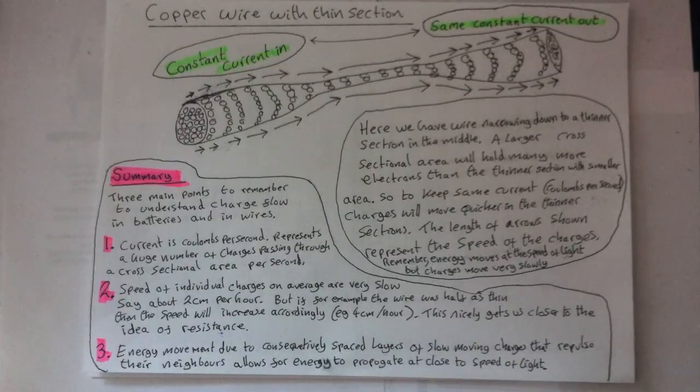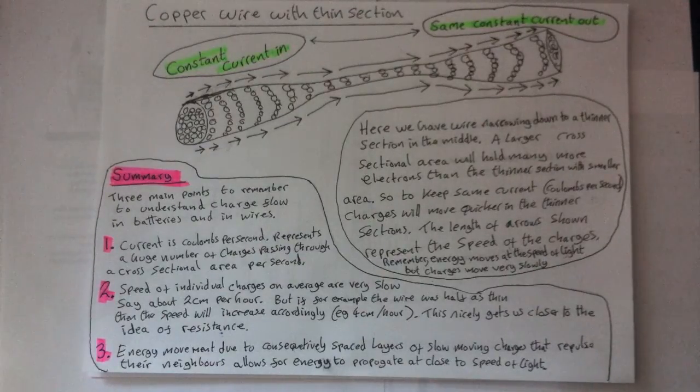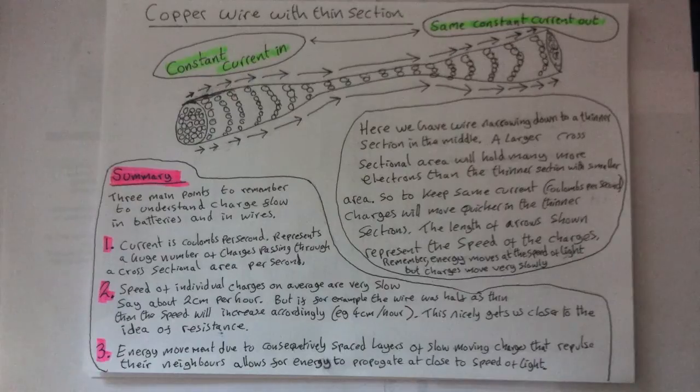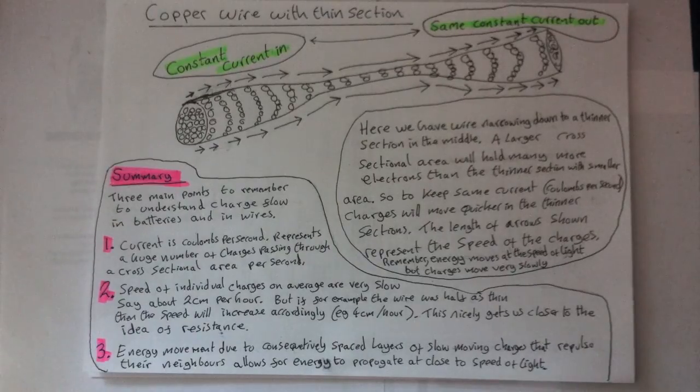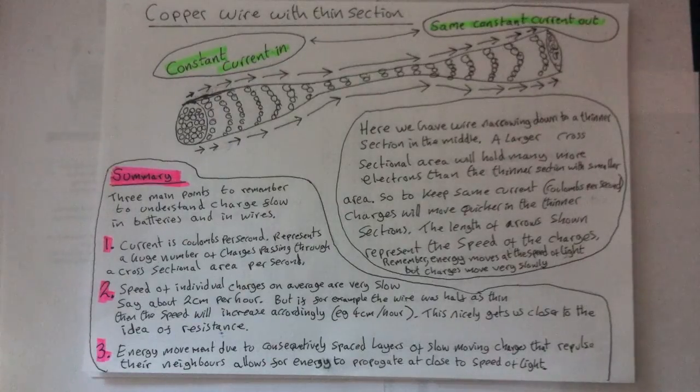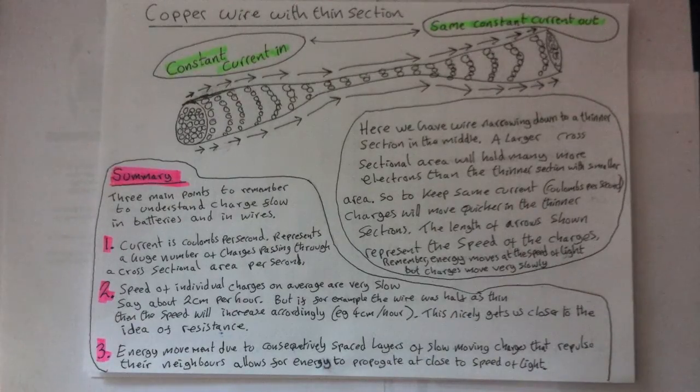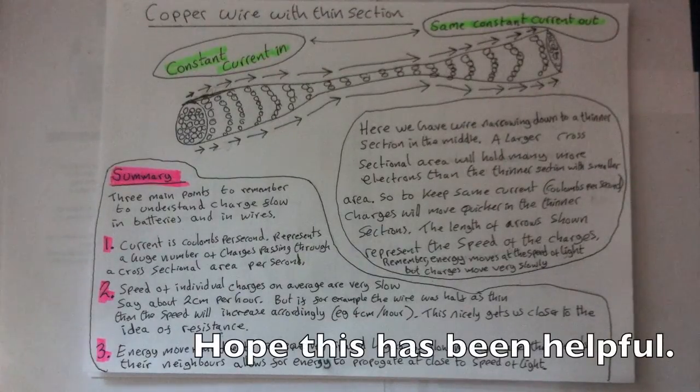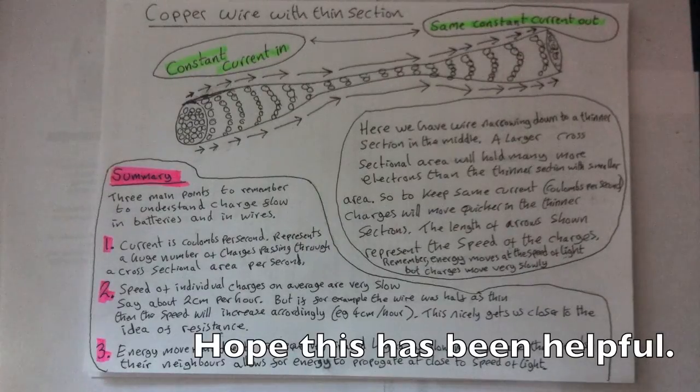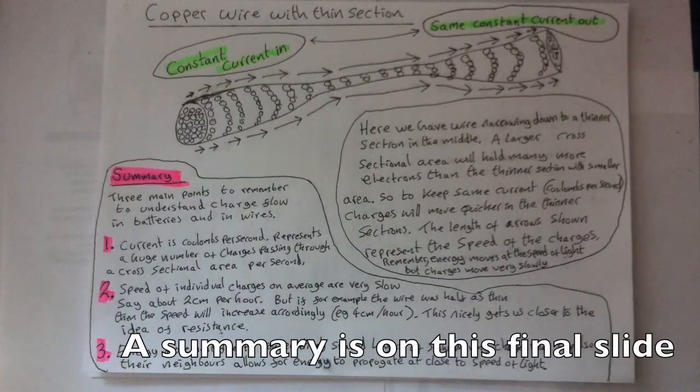This means that the thinner wire, which we know holds a lot less charges per cross-sectional area, will have its charges moving faster, because the coulomb per second rate is the same everywhere in the circuit. For example, pushing the first layer of marbles at a given rate of marbles per second or current will mean the last layer must also have that same rate of current. So for any fixed current value, individual charges will move faster through thin wires than through fat wires.